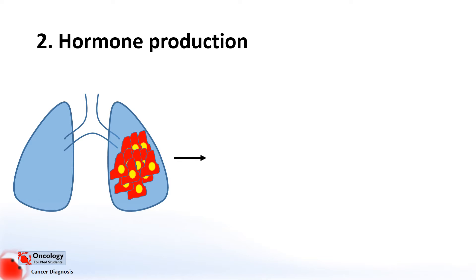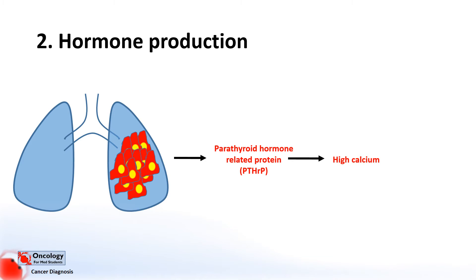If you know anything about calcium metabolism you'd have heard of parathyroid hormone. This is a hormone that's normally released in relation to low levels of calcium. Parathyroid hormone works on the bones, the gut, and the kidneys in order to raise the level of calcium in the blood to a normal level. When it's released by cancers, however, the level of calcium in the blood is often normal to start with and it isn't releasing the hormone in response to any kind of detected levels of calcium. What this means is that it leads to high levels of calcium in the blood.